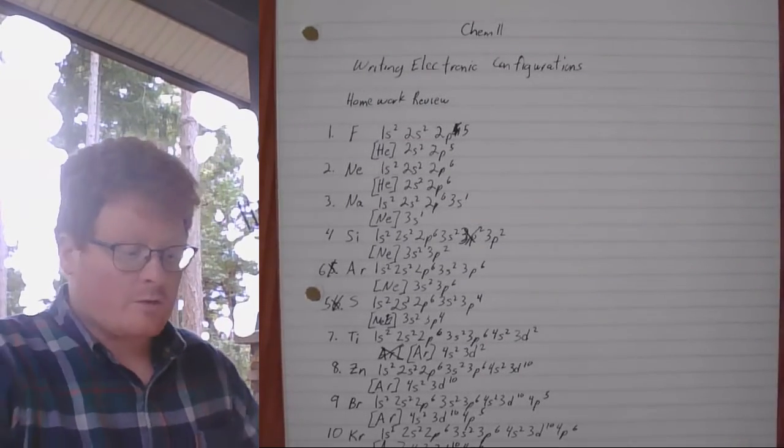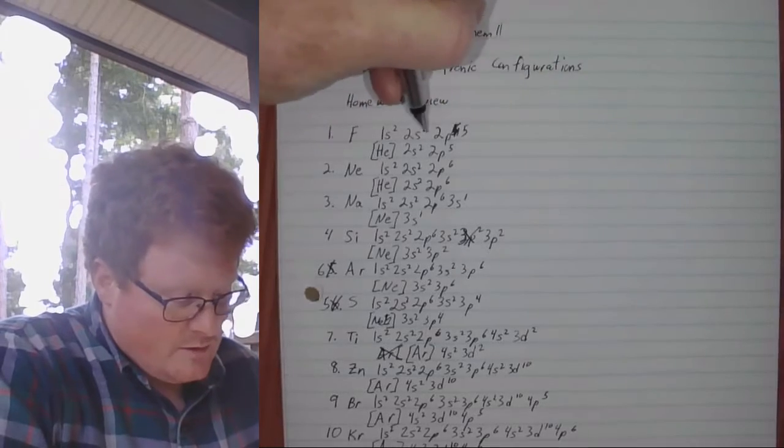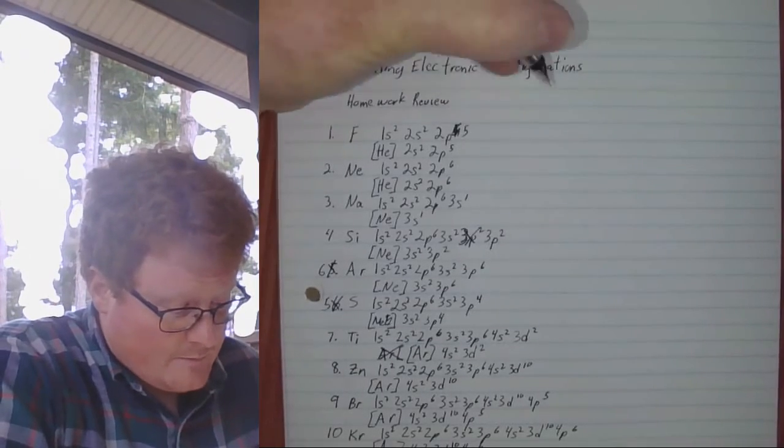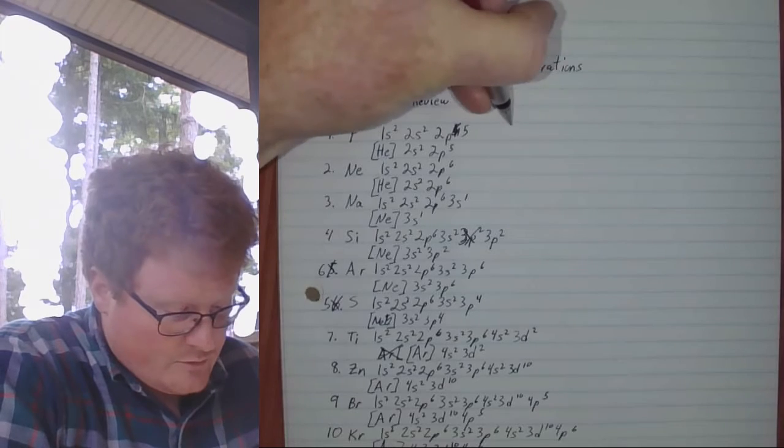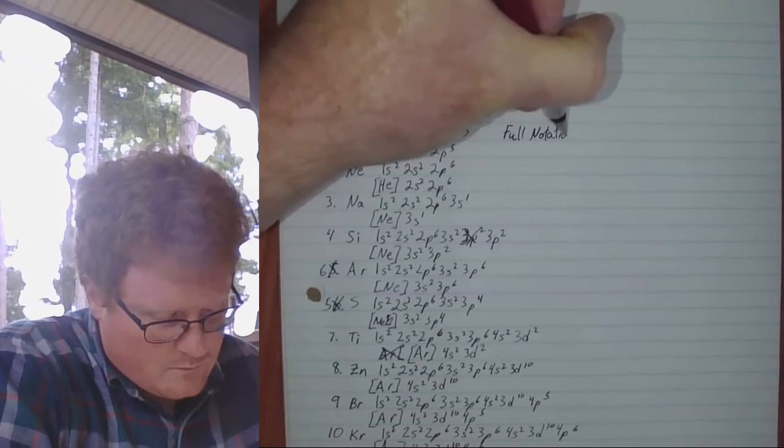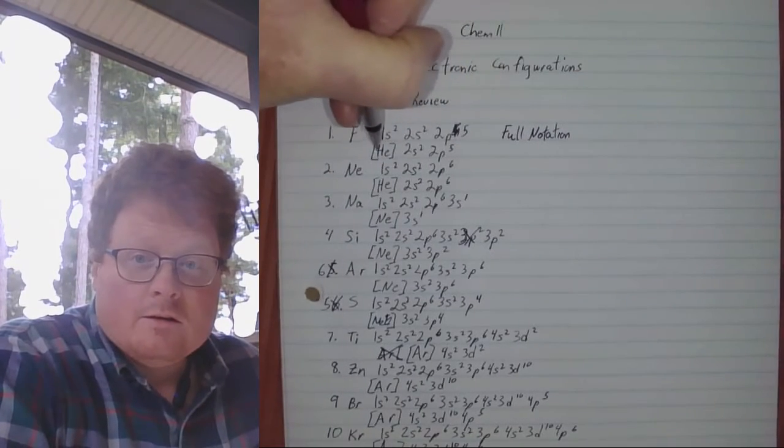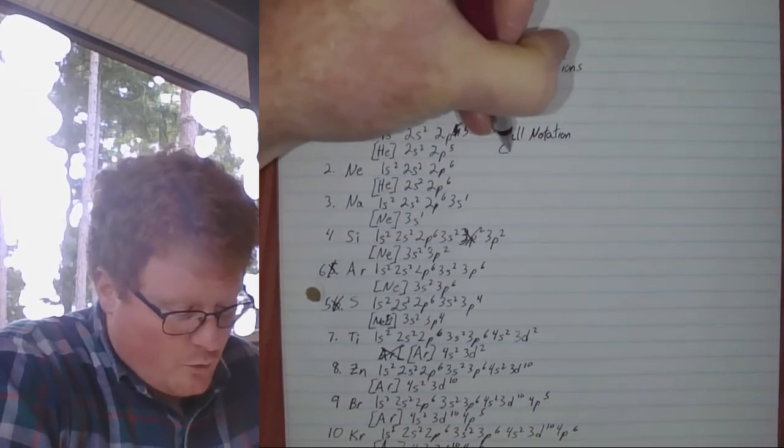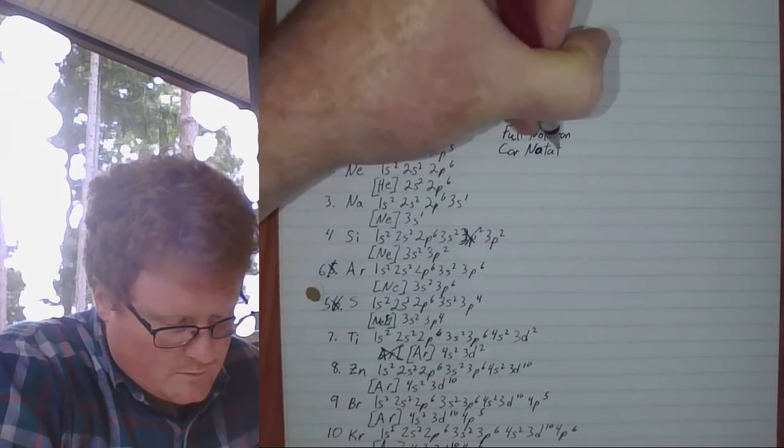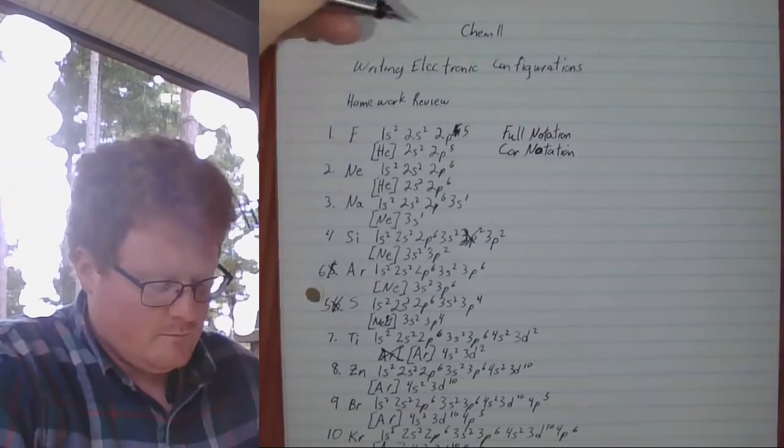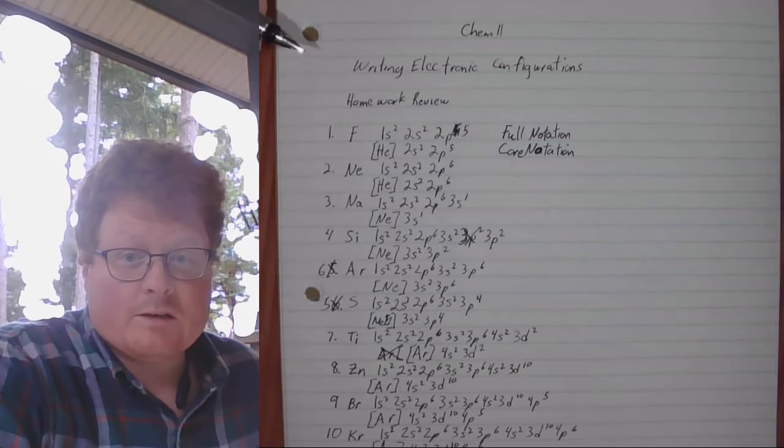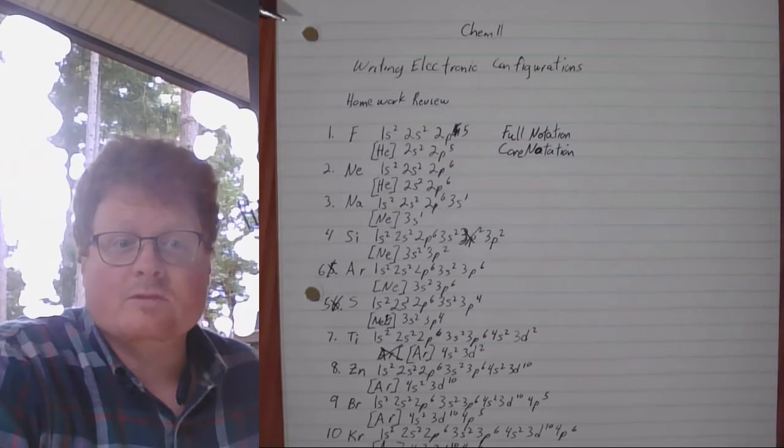This is my answer key for your homework. So I asked you to write the electron configuration. You could have written it in one of two different ways for each atom. You could have written it as the full electron notation, or the abbreviated form which is known as the core notation. Both are acceptable.